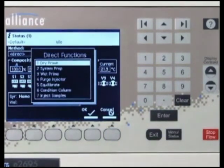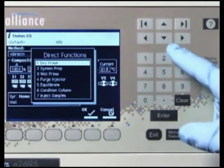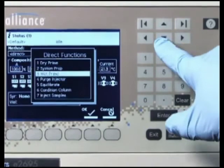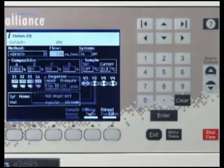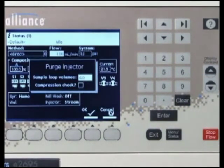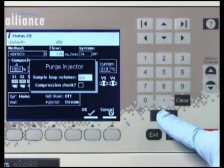Select purge injector, then press enter. In the number of sample loop volumes field, enter 6, then press enter.